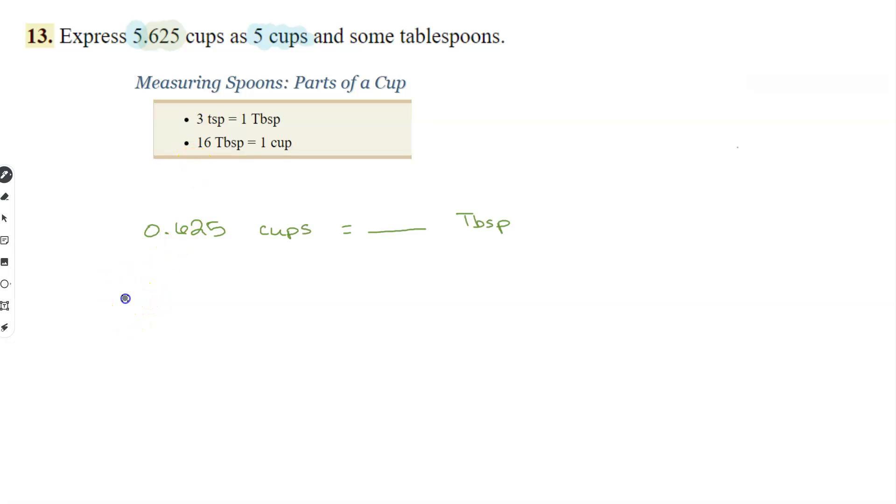So one situation is that there's 16 tablespoons in one cup. That's always true. In this problem, how many tablespoons are in 0.625 cups?